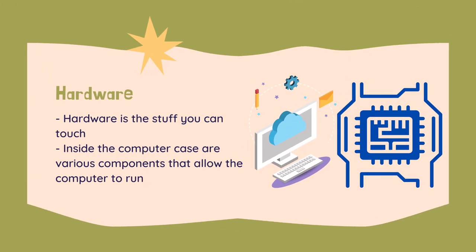Hardware is the stuff you can touch, as opposed to software which is abstract and exists only in a virtual world as computer code. Hardware is made of materials found in the universe and are subject to the laws of physics. Inside the computer case are various components that allow the computer to run.